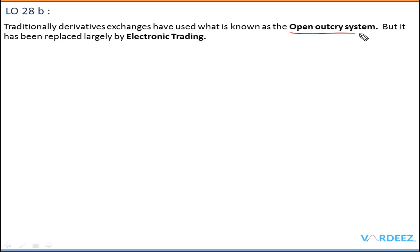Traditionally, derivatives used to be traded on an open outcry system — a system where people would stand, shout, and give hand signals to conduct trading. This is a very old system that used to exist, but in today's world electronic trading has replaced the open outcry system, so you can now trade derivatives electronically.